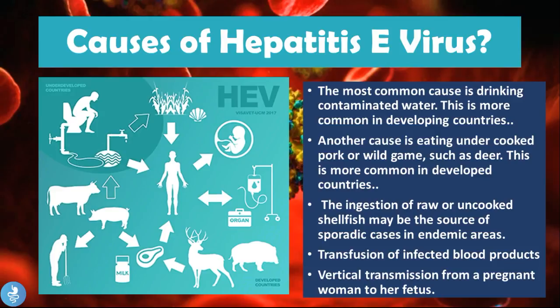Another cause is eating undercooked pork or wild game such as deer, which is more common in developed countries. Developed countries usually don't have the problem of contaminated water but can be affected through contact with infected animals. Ingestion of raw or uncooked shellfish may also be a source of sporadic cases in endemic areas. The disease may also occur through transfusion of infected blood products, and there may be vertical transmission from a pregnant woman to her fetus.